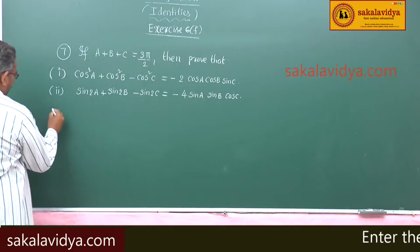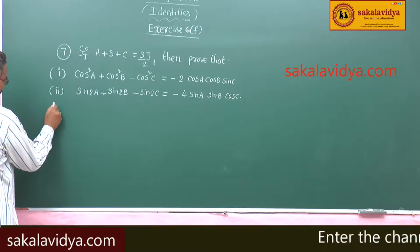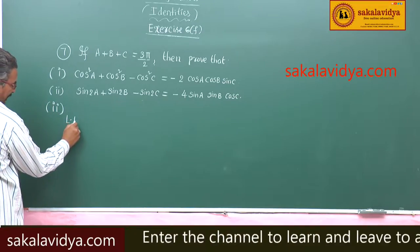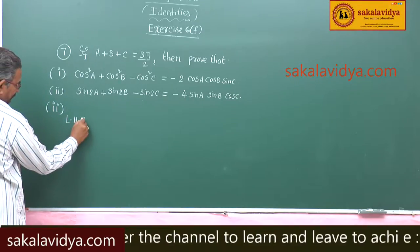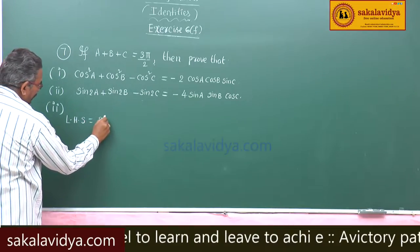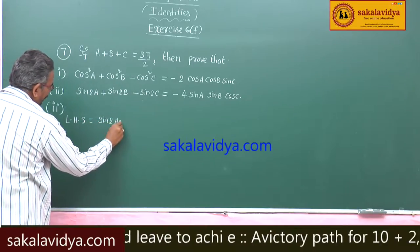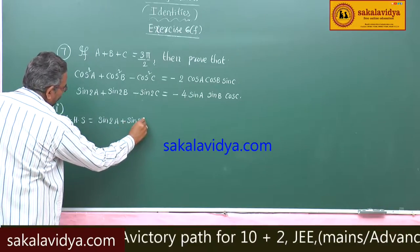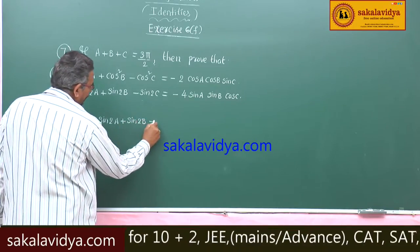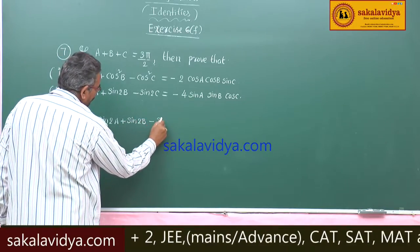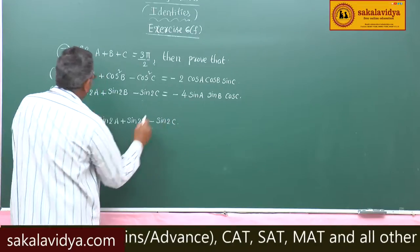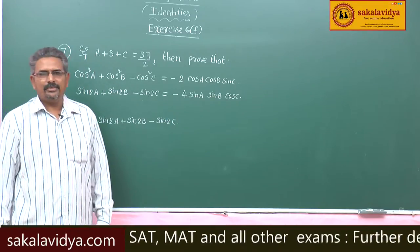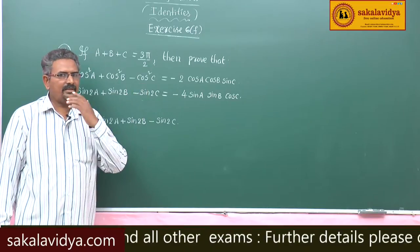Now, second problem. Left hand side: sin2a plus sin2b minus sin2c, given the condition a plus b plus c is equal to 3π/2, that is 270 degrees.